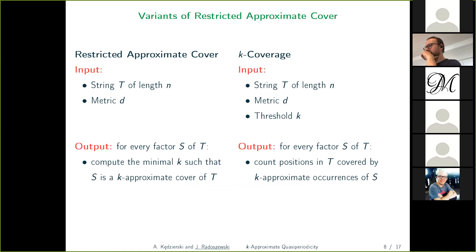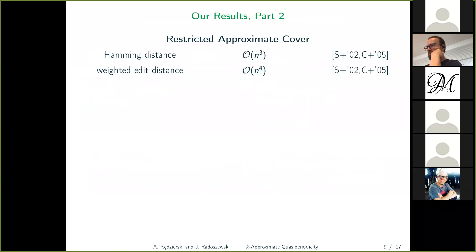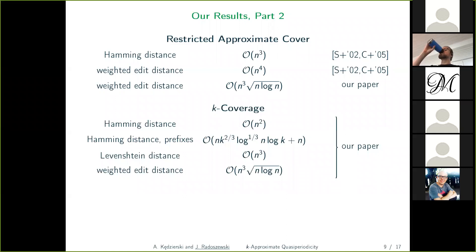The other formulation goes in the other direction: we are given a threshold at the start, and for every factor we want to know how many positions in t are covered by approximate occurrences of that factor. Here we don't require the factor to cover all positions — we just want to know how many positions in total are covered. So the first version requires covering the whole string; the second gives a threshold and asks how much we can cover. The first variant was already studied in the two papers mentioned earlier.